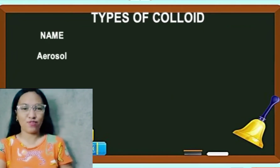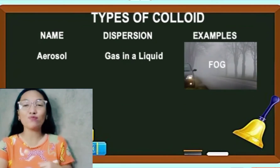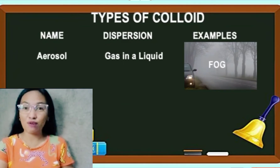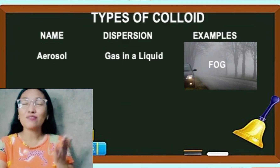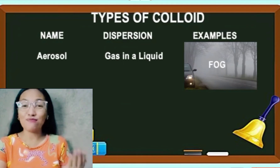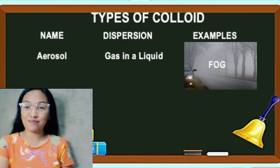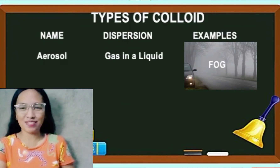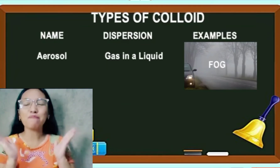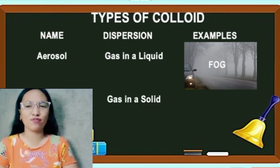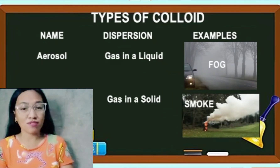Next, we have aerosol. The dispersion is gas in a liquid. An example of this is fog. In a cold atmosphere, we usually experience fog, just like in the summer capital of the Philippines — Baguio City. You may also see fog in Tagaytay, since they both have a cold atmosphere. Another example of aerosol is smoke.